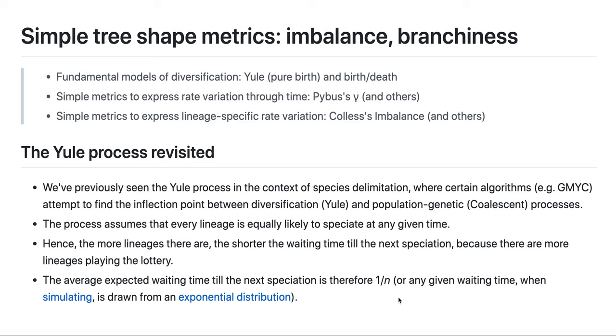So either one of them is more likely to win that lottery. More generally, as the number of lineages increases, the waiting time till the next speciation event is, and therefore becomes, on average one over N, where N is the number of lineages that are in the game.